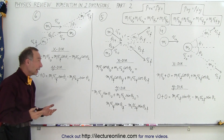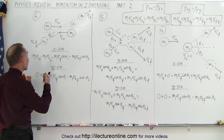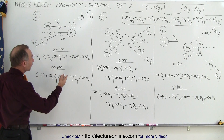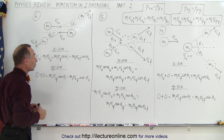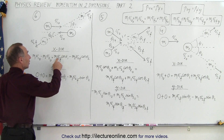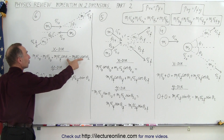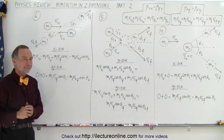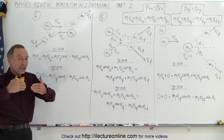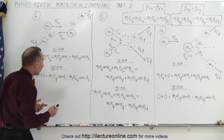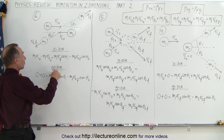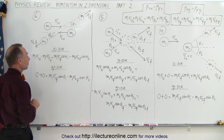And then again, the problem will probably give you the initial velocities of both objects and two of the four final unknowns — either the two angles, the two velocities, or one velocity and one angle. But since there are still two unknowns, you will have to set up a second equation: conservation of momentum in the y direction.